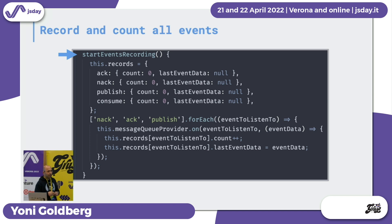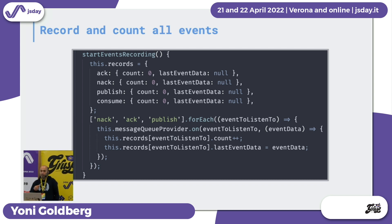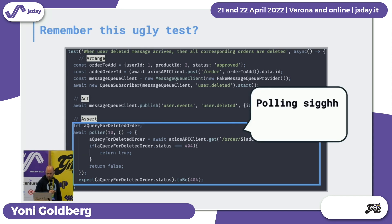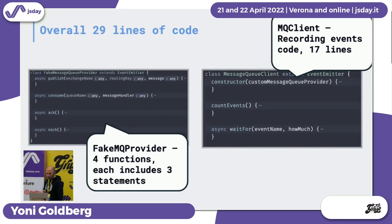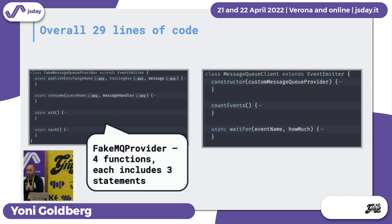On top of the fake, you need a convenient recorder layer for the test, which basically counts events and returns them with a promise. We initialize all the events that can happen — acknowledgement, publish, subscribe — with the counter set to zero. For each event, we listen to the fake message queue, subscribe to the event, and if it fires, increment the counter. That's 29 lines of code total. On top of this, we create a 'wait for event' function in the recorder, so the test can call wait for a specific event and get back a promise that resolves only when that event happens.